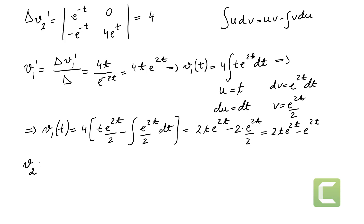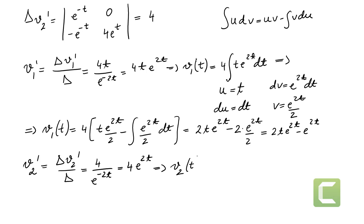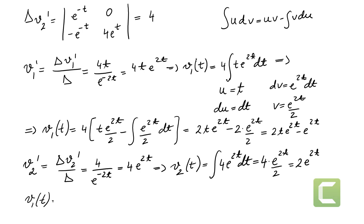For v2, applying the same procedure: v2' = 4e^(2t), so v2(t) = integral of 4e^(2t) dt = 4 · e^(2t)/2 = 2e^(2t). So we have v1(t) = 2t·e^(2t) - e^(2t) and v2(t) = 2e^(2t).